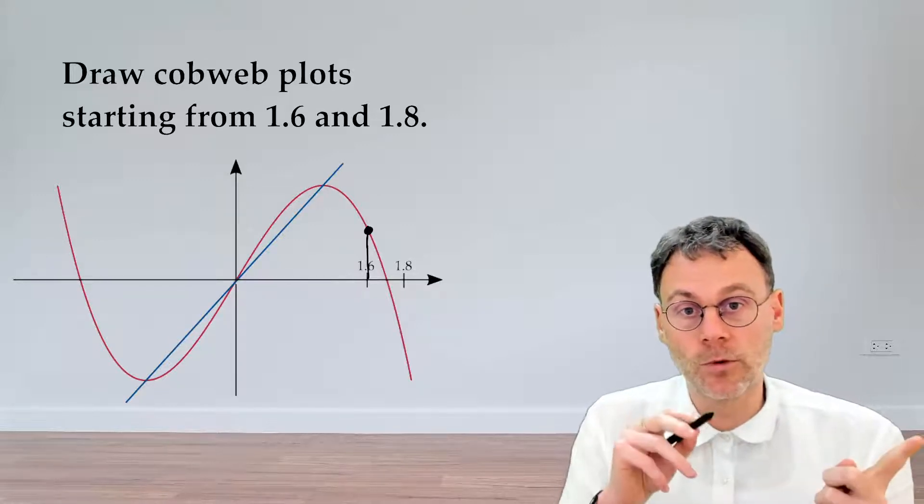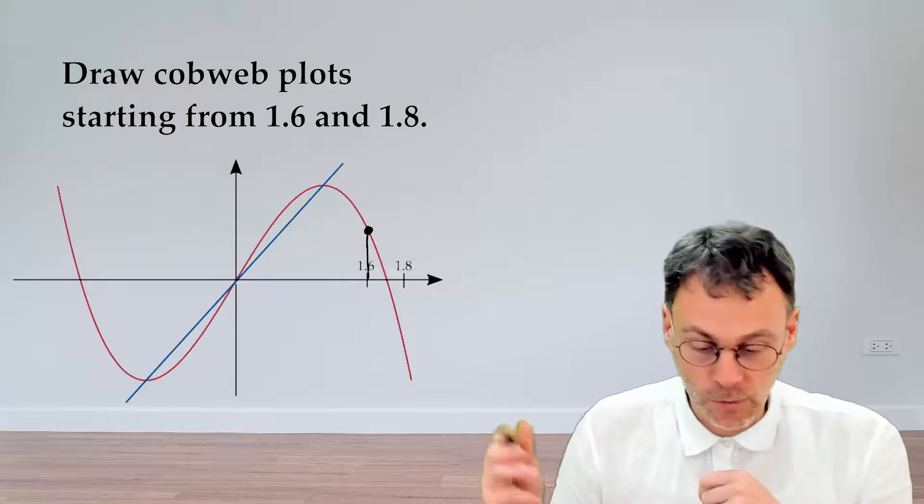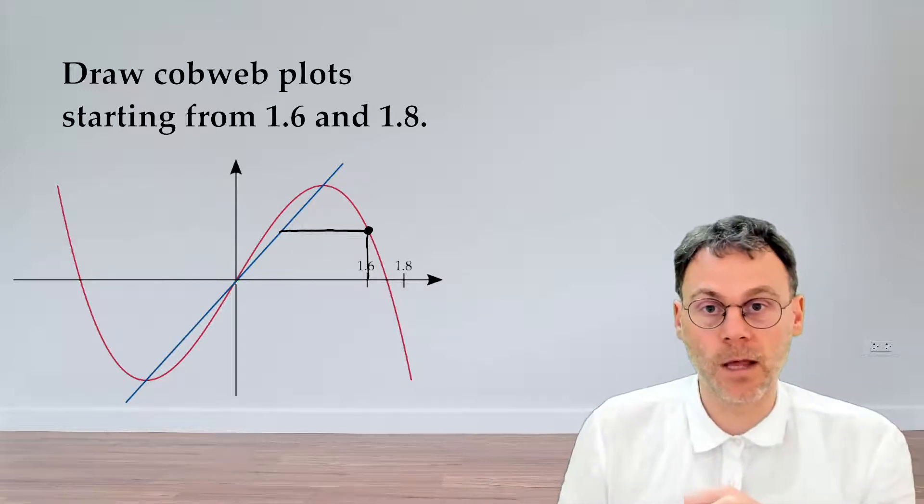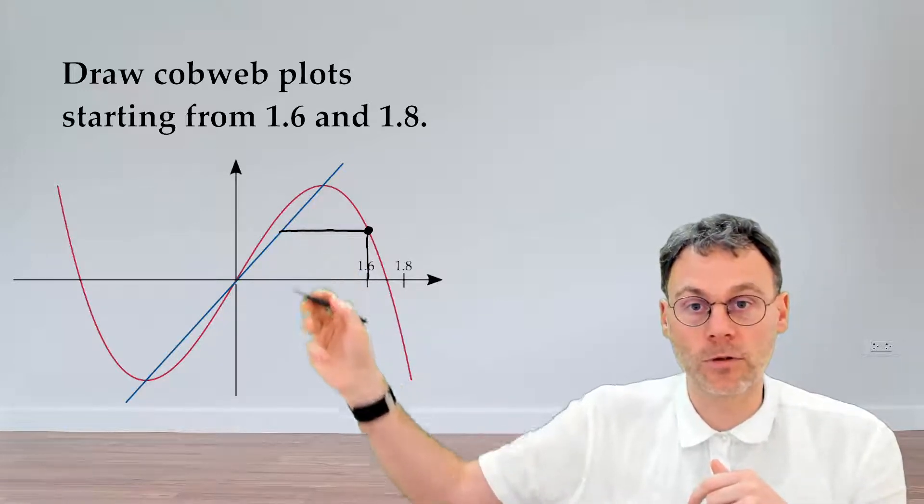Now we need to turn that output back into an input, and we can do that by moving horizontally until we hit the line y equals x. Now we have a new input over here.